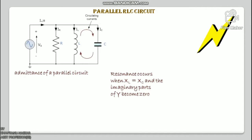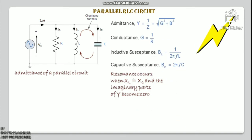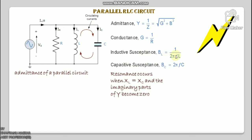Let us define what we already know about the parallel RLC circuit. Admittance Y = 1/Z = √(G² + B²). Conductance G = 1/R. Inductive susceptance BL = 1/(2πfL) and capacitive susceptance BC = 2πfC.